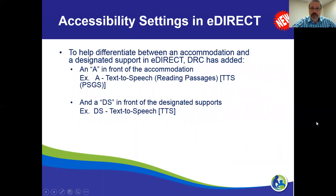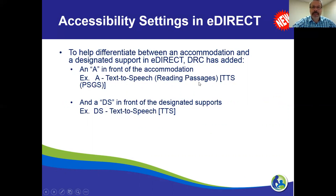You will know that supports are turned on when you look at the ticket. If it is an embedded support, it will say 'A' for accommodation — for example, text-to-speech for reading passages with some abbreviations — or 'DS' for designated support. These are very different. Remember that accommodations require an IEP or a 504, whereas designated supports are for students in general.